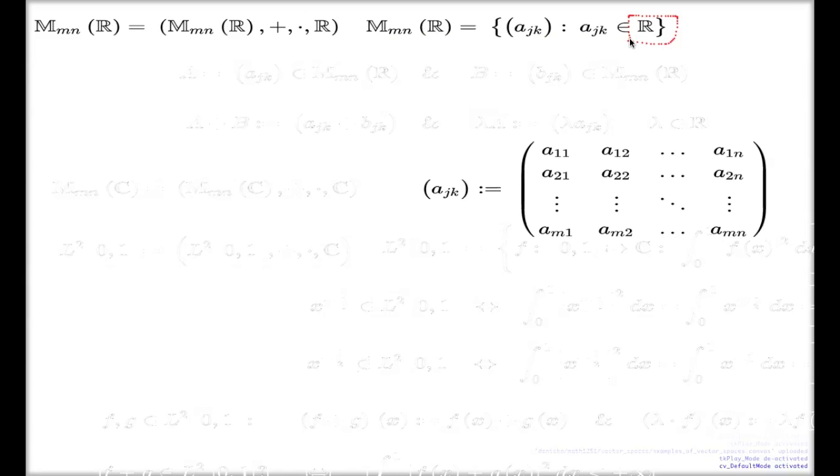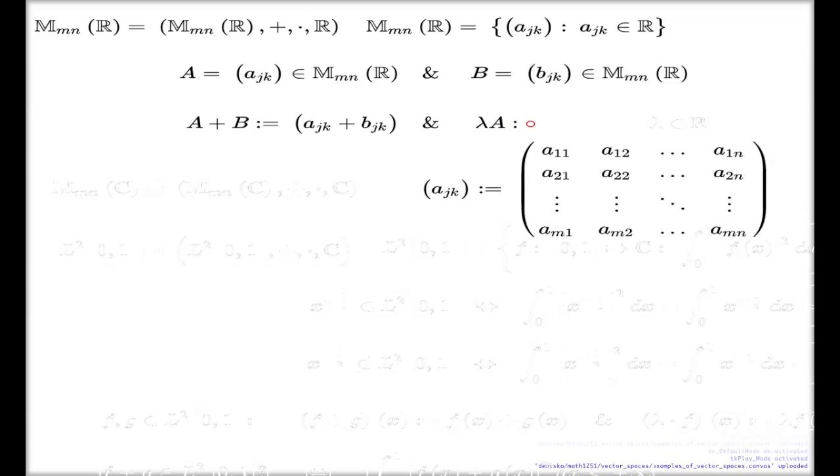There will be a vector space if you supply them with operation plus and dot like this. If you have two matrices, one of them with the entries labeled A_jk, and the other one is matrix B with the entries little b_jk, like this. Then you add your matrices by constructing a new matrix of the same size and by adding entries one by one.